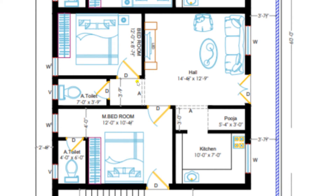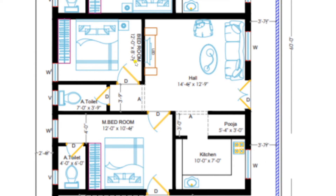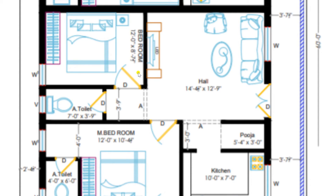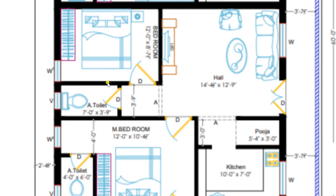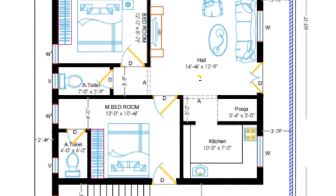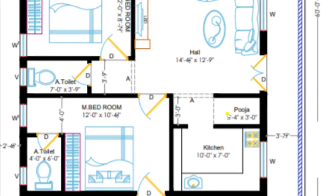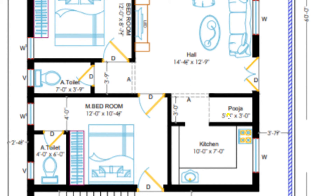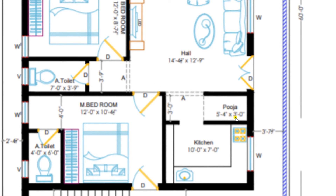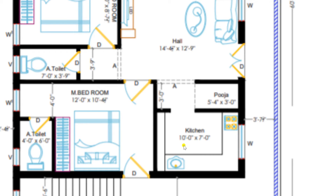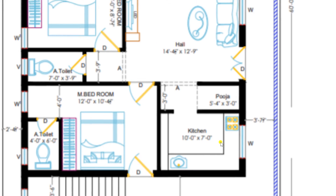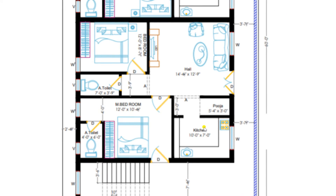From the hall I am entering to the master bedroom of our plan — a bedroom of size 12 feet by 8 feet 7 inches, which is attached with a toilet of 7 feet by 3 feet 9 inches. On the right side of the hall, through the arch, I have entered to the Pooja Kadhi of size 5 feet 4 inches by 3 feet. From the Pooja Kadhi you can also enter to the lavish kitchen area of size 10 feet by 7 feet — a very comfortable area for the kitchen.